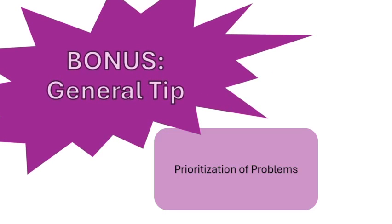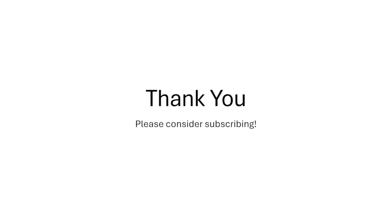One more bonus general tip is to prioritize problems according to your strengths. If you're good and fast at algorithmic problems or have good knowledge of the content covered, prioritize solving those first so you know you have some points to start with. Another example would be if you knew one of the languages on the test or had practiced similar problems. Solve problems you know how to solve first, then move on to the more experimental ones. At the end of the day, my number one tip for NACLO is to practice a lot. The more familiar you are with the problems, the more accurate and fast you are. Thank you for watching and please consider subscribing.